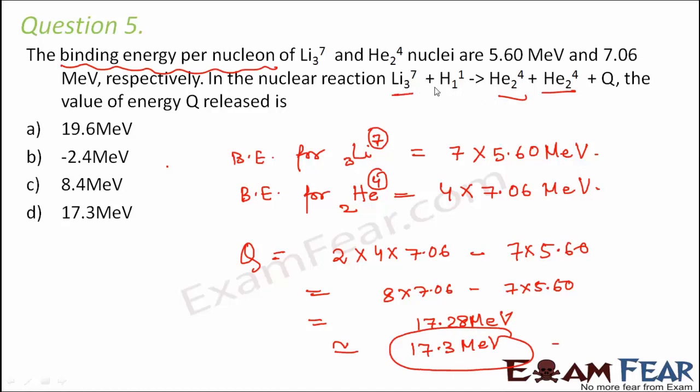We note that there was a proton (hydrogen) on the reactant side, but the binding energy of hydrogen is negligible, so we have ignored it here. The correct option is D.